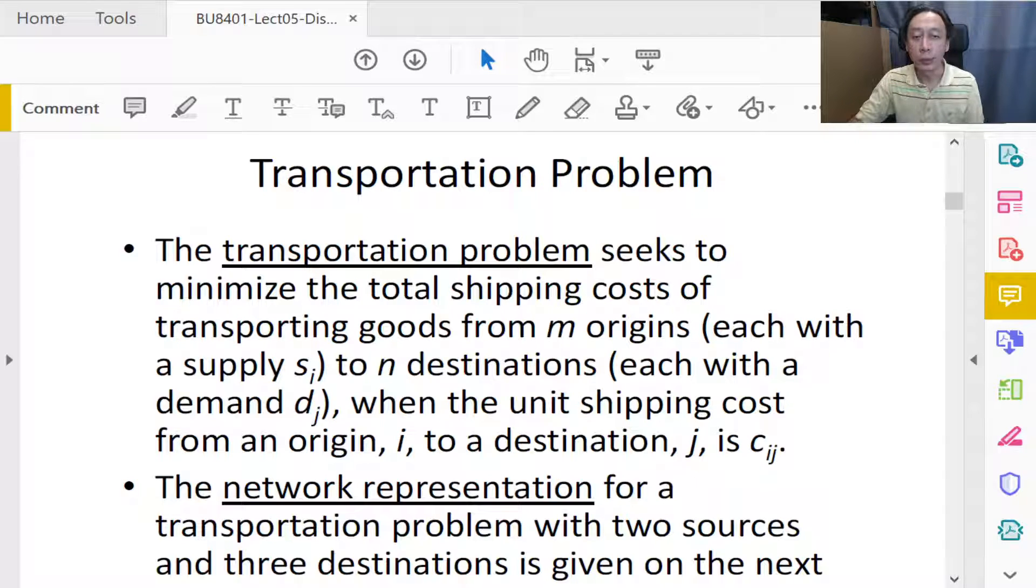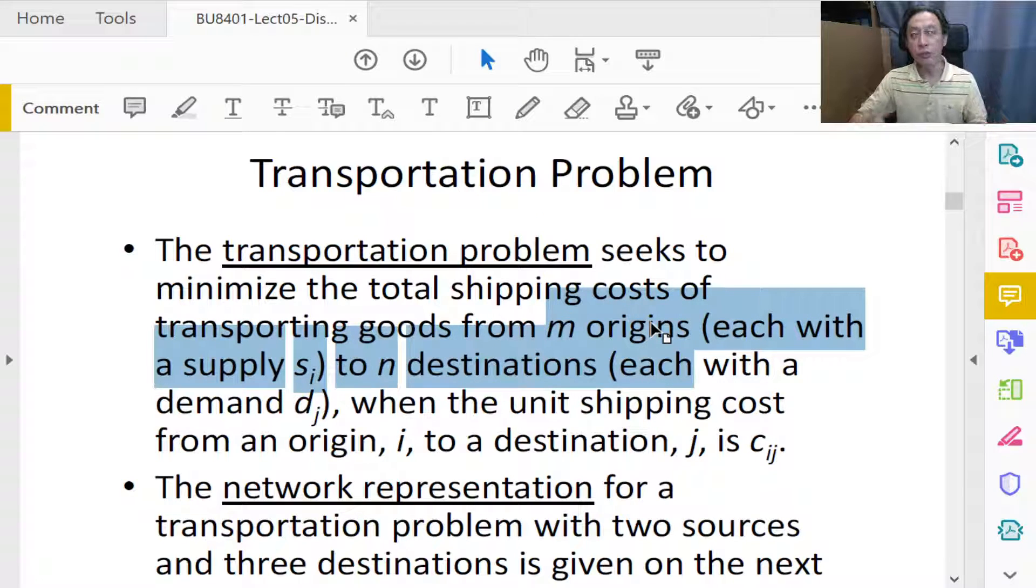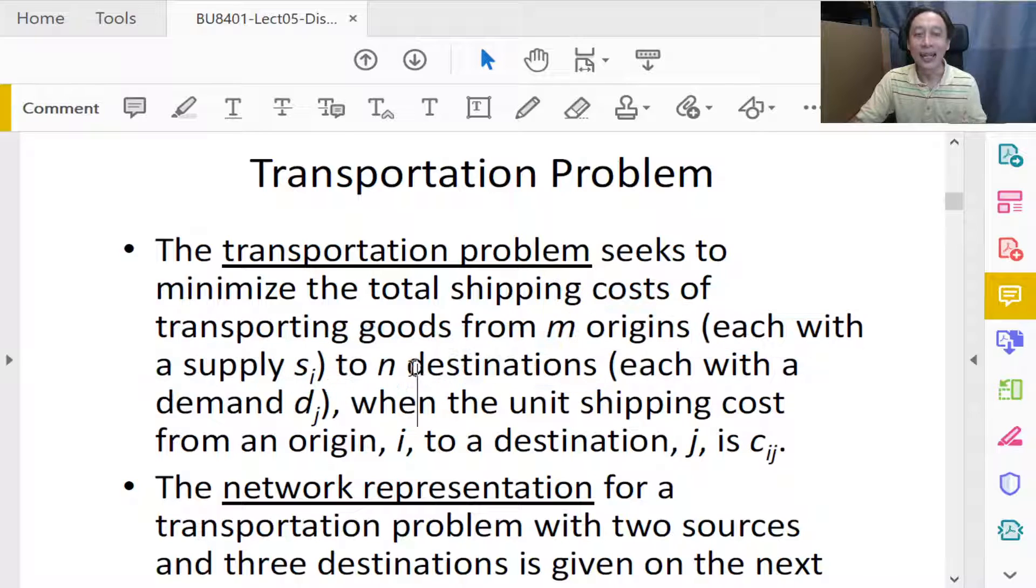Transportation problem is characterized by having M origins—the origins will be like factories delivering goods to warehouses. So we have M factories, M origins and N destinations. Destinations will be the site or the locality or the entity that receives those delivered goods.